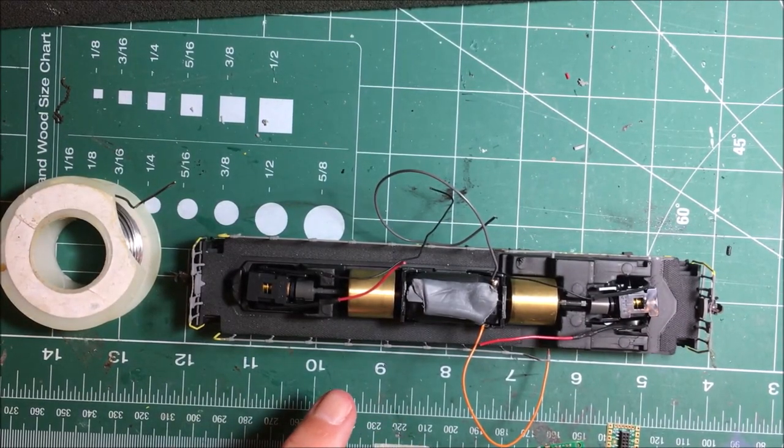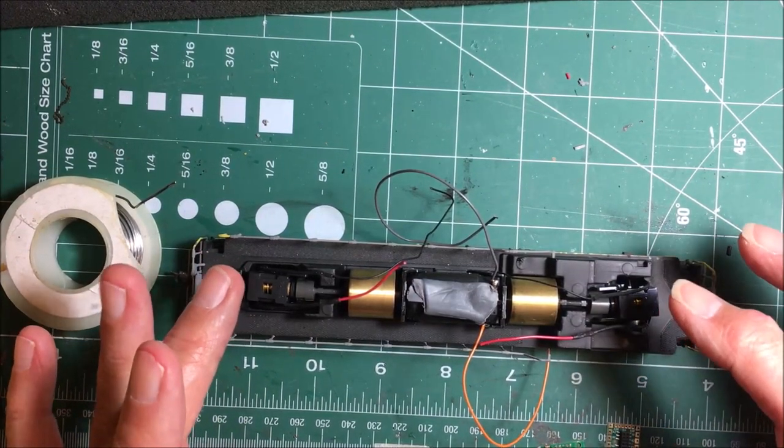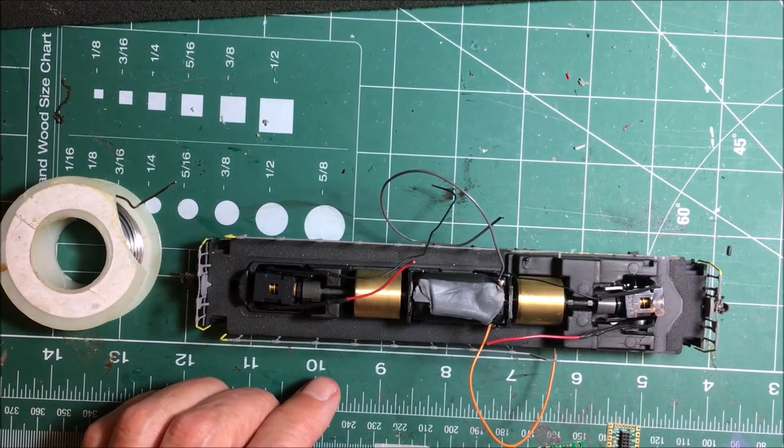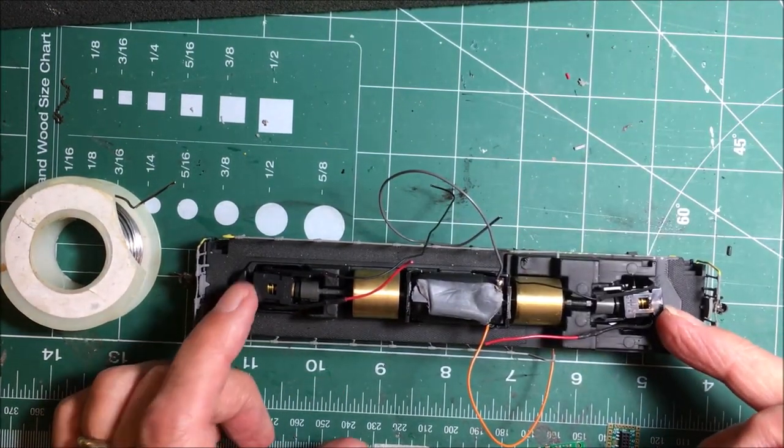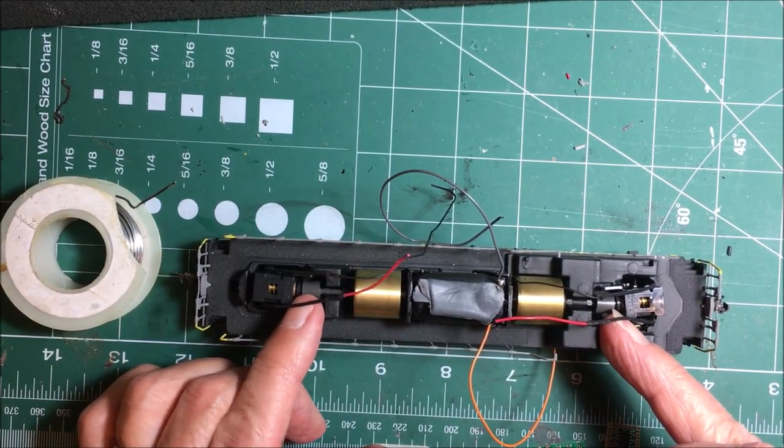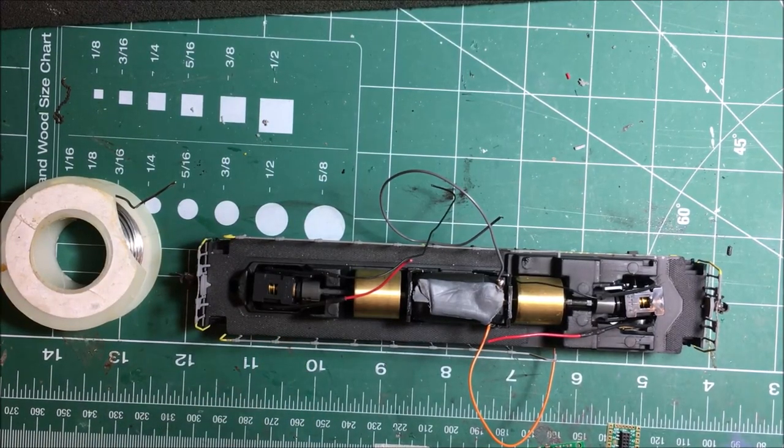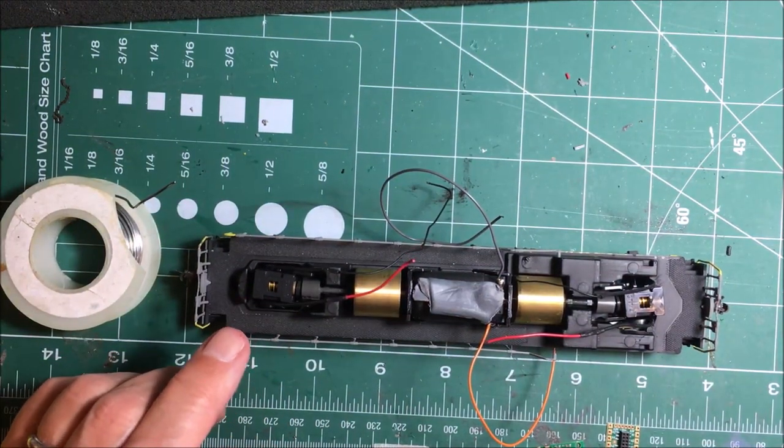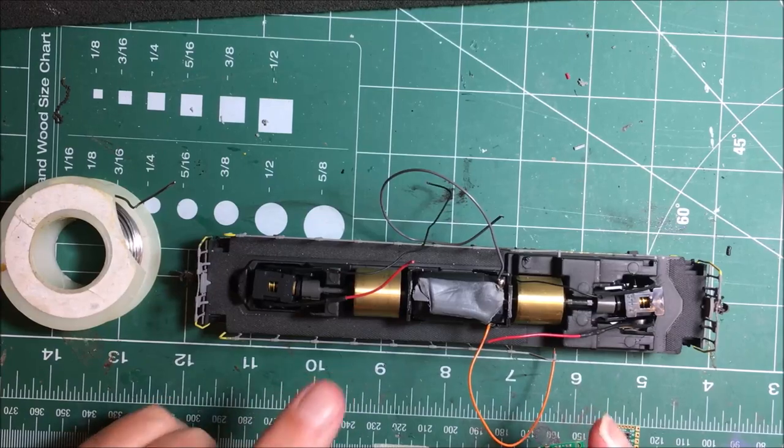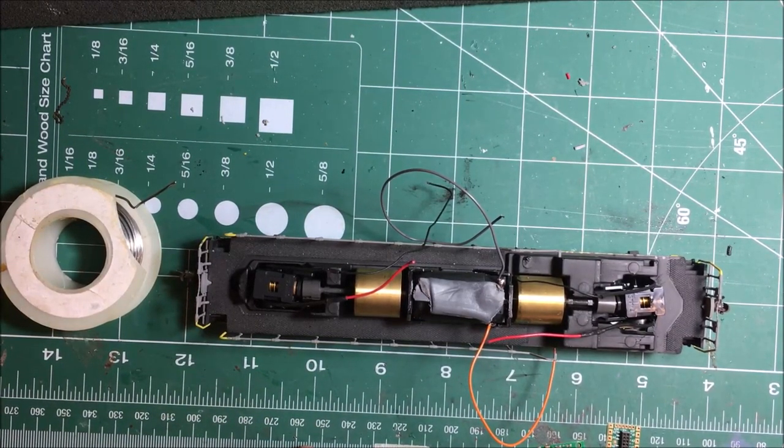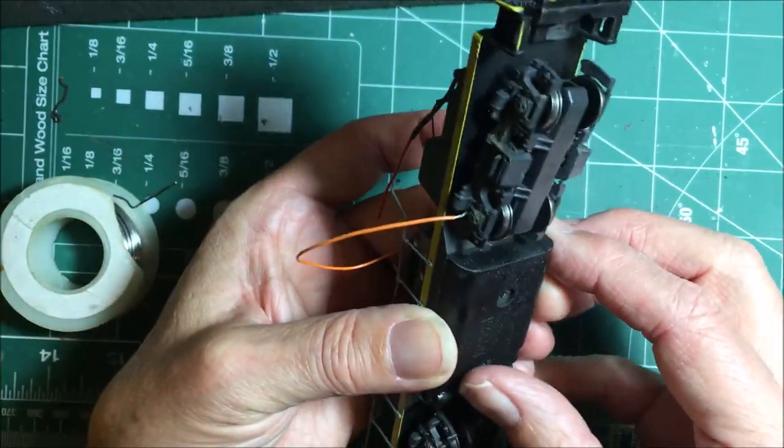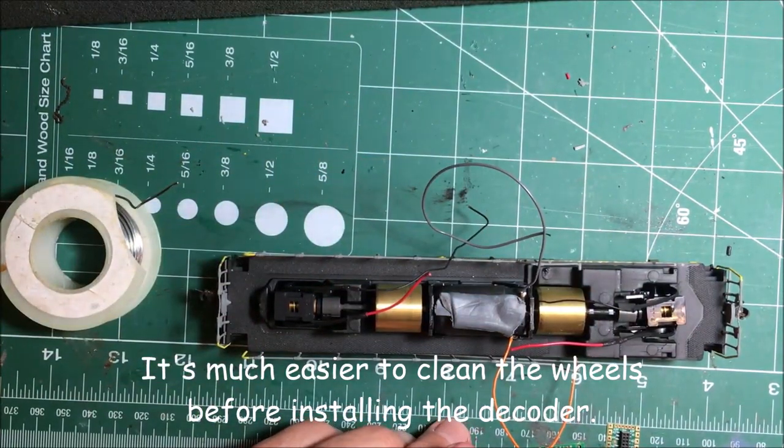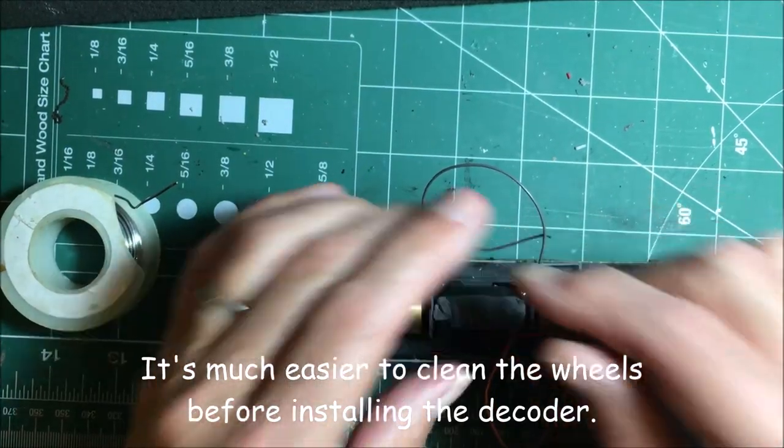Before I continue, there was a couple things I wanted to mention. Before you go any further, it would be a good idea if the locomotive hasn't been run in a while to add some grease or oil to the bearing surfaces. I used LaBelle number 107 on the bearings, and I used some Hobby Lube, Woodland Scenics number 655, on the worm gears and run it for a few minutes. Another thing would be a good idea to do before you take it apart is to clean the wheels. I had done a lot of weathering to this engine and there was a lot of crud on the wheels.